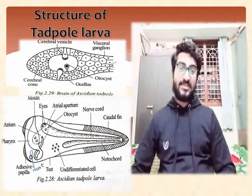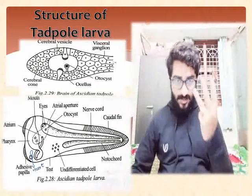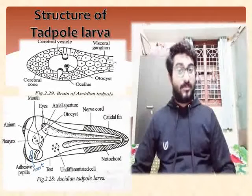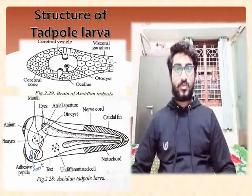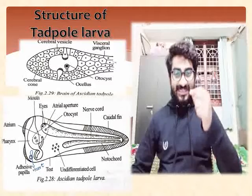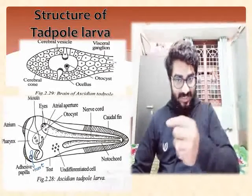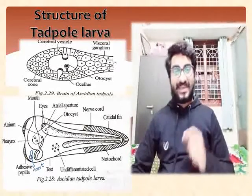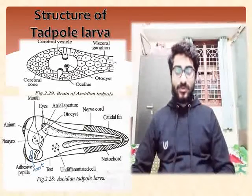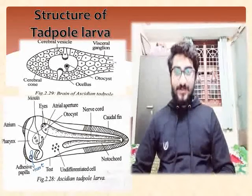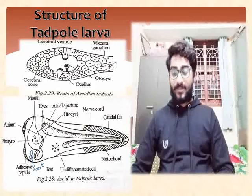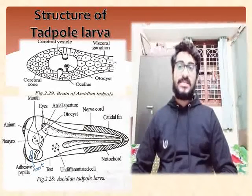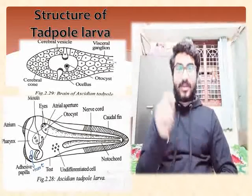The brain contains three parts or three regions. One is the cerebral cone, which is triangular or cone-like in shape. The second is the cerebral vesicle. The third is the cerebral ganglion.